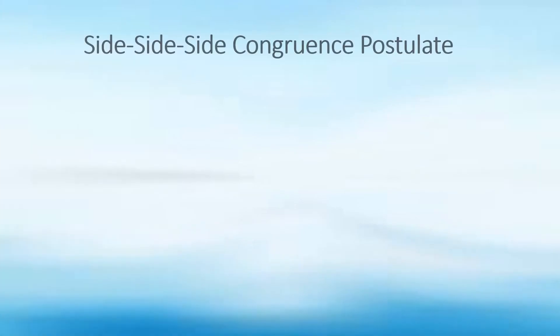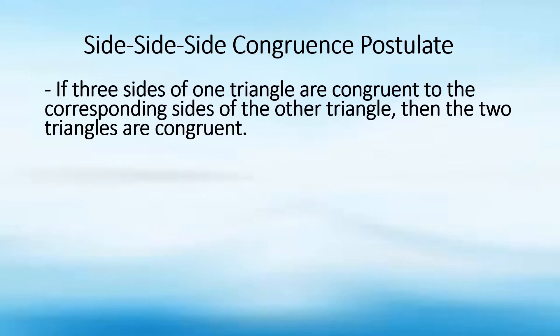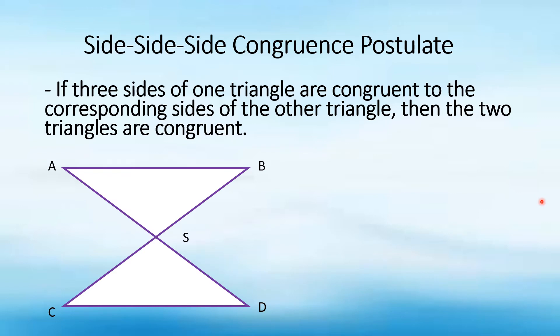So let's have the first postulate, which is the SSS, or the side-side-side congruence postulate. It states that if three sides of one triangle are congruent to the corresponding sides of the other triangle, then the two triangles are congruent. So let's have an illustration for this.